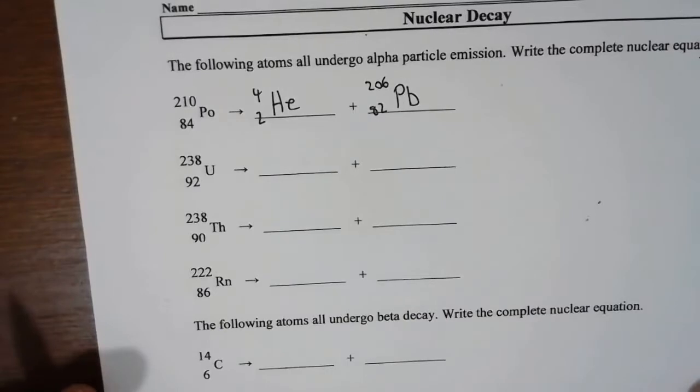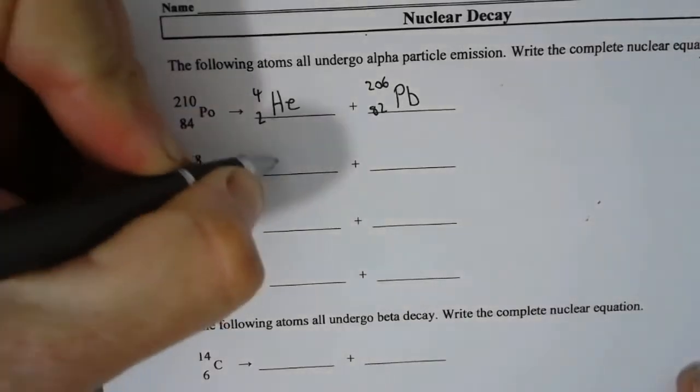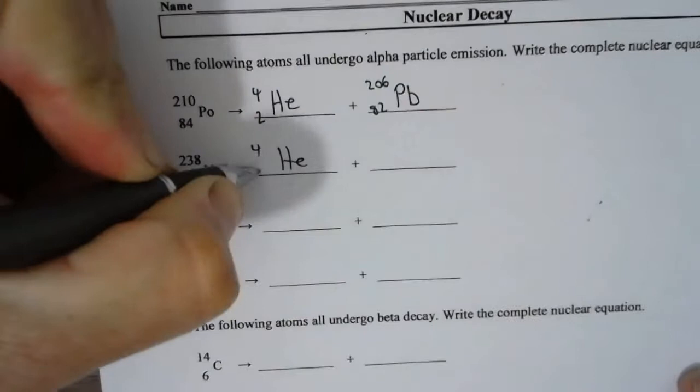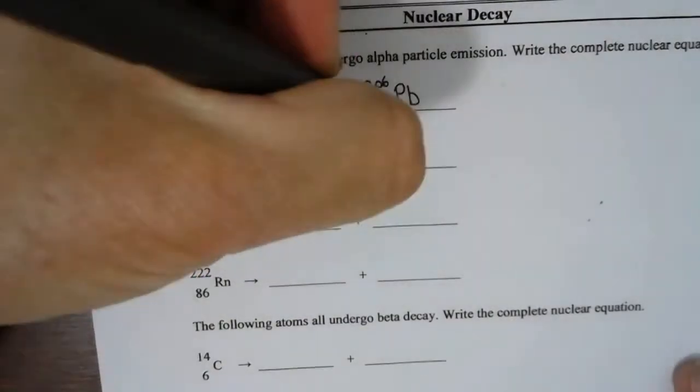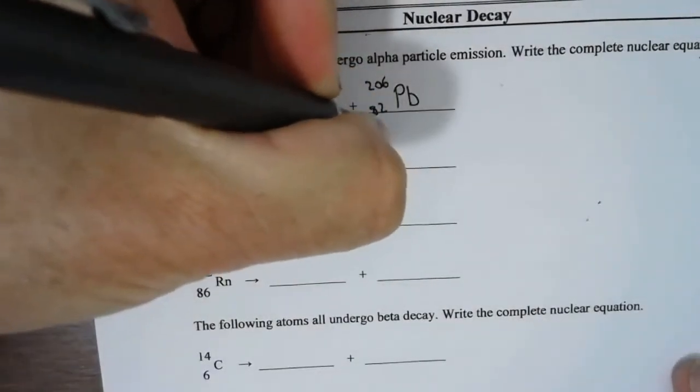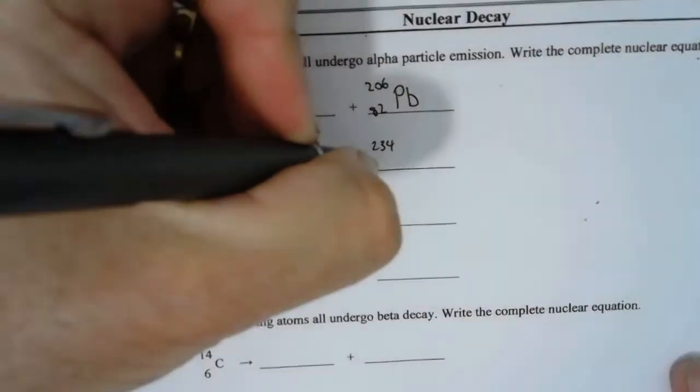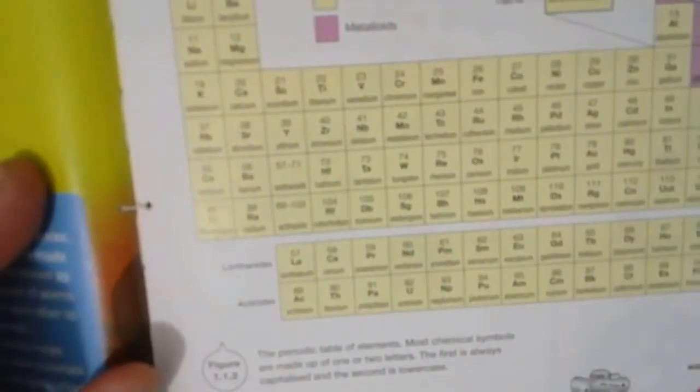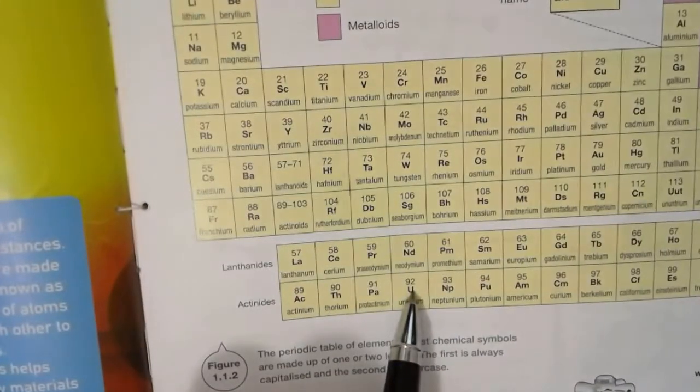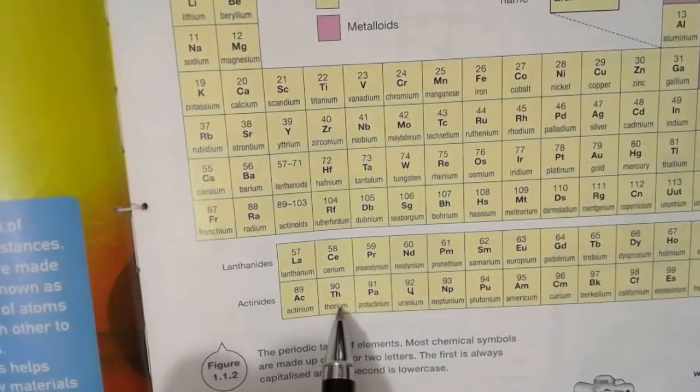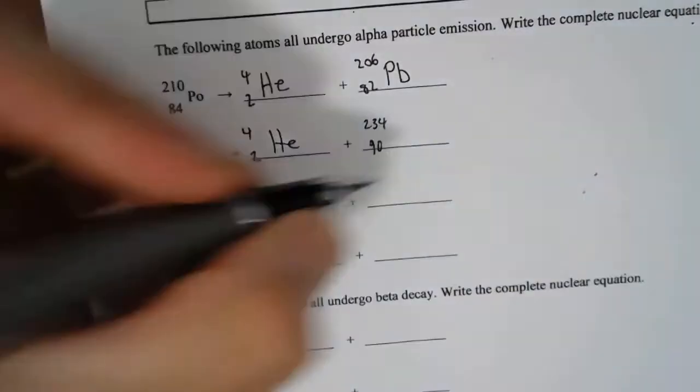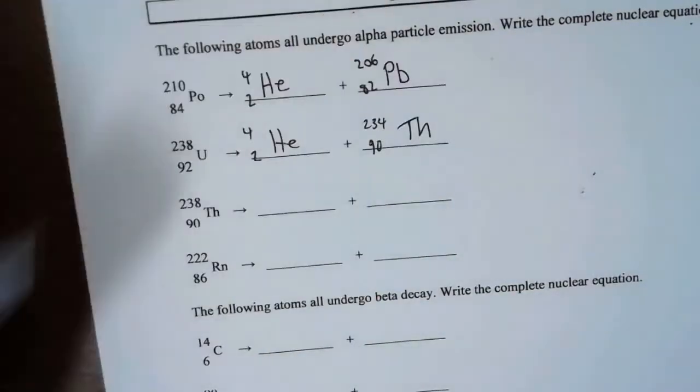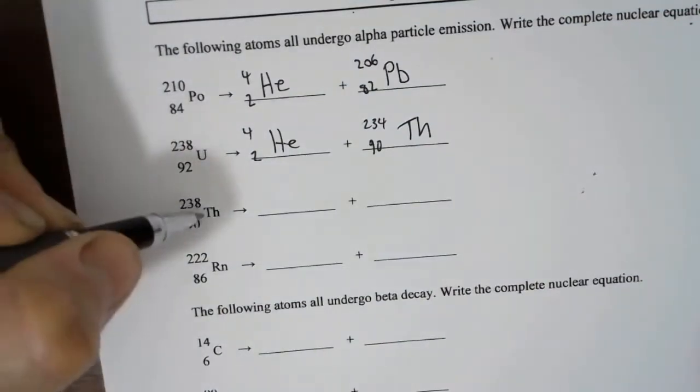So let's do this next one. The next one is uranium-238. Again, helium nucleus. 238 minus 4 is 234. 92 minus 2 is 90. Grab our periodic table, find 90, and we've gone from uranium down to thorium. Th. All right, so here we've got thorium here.